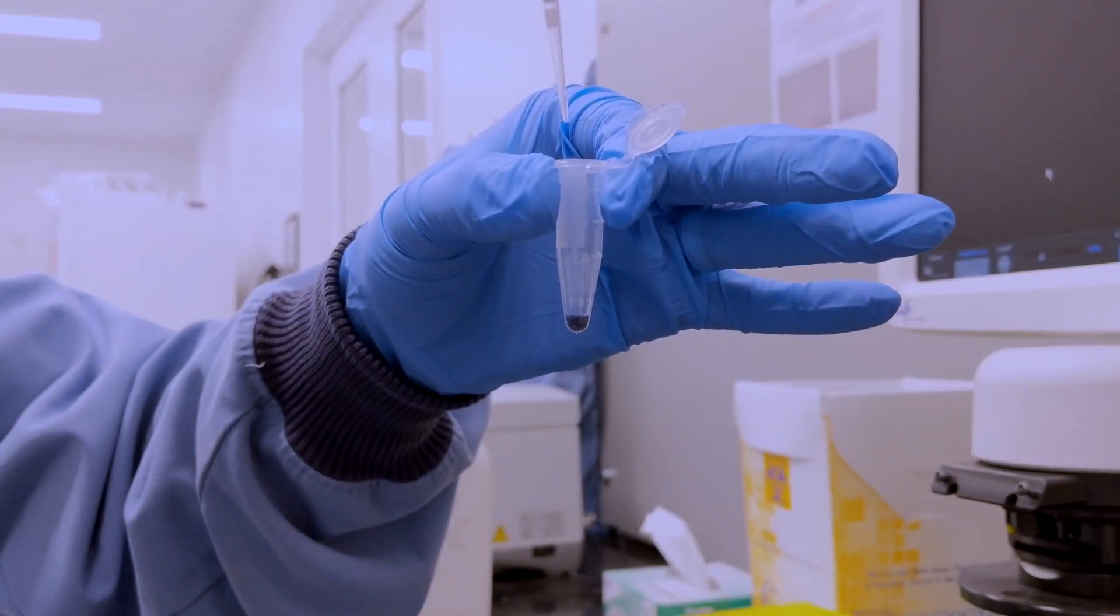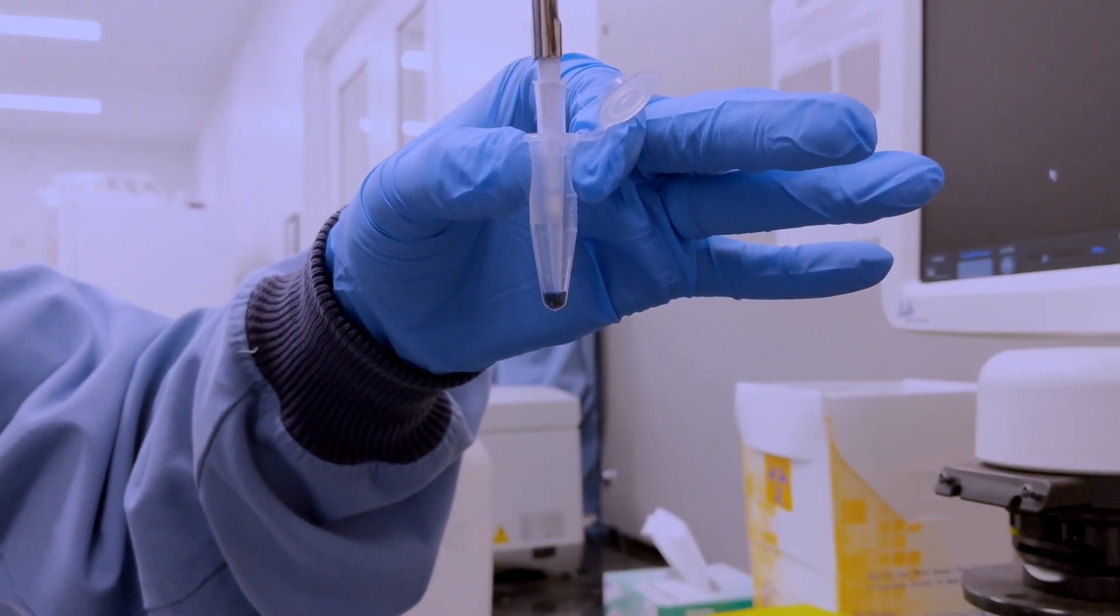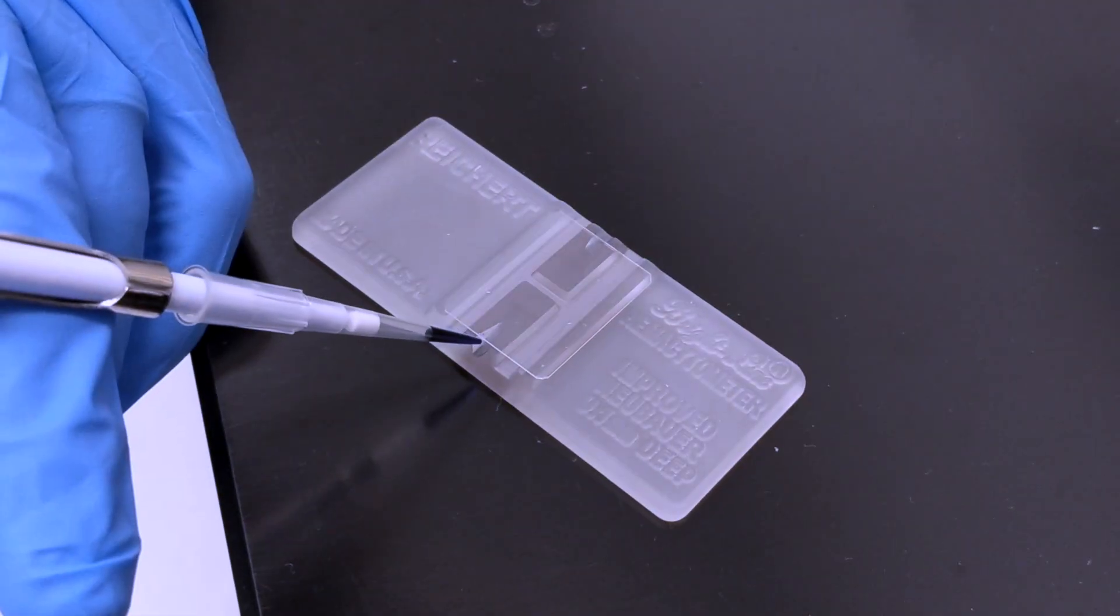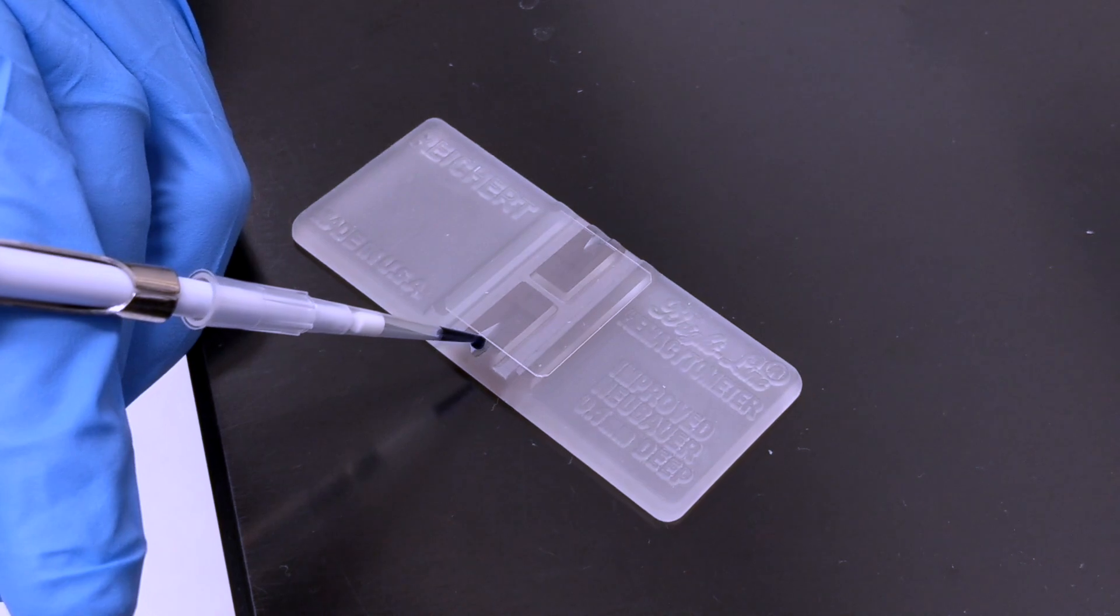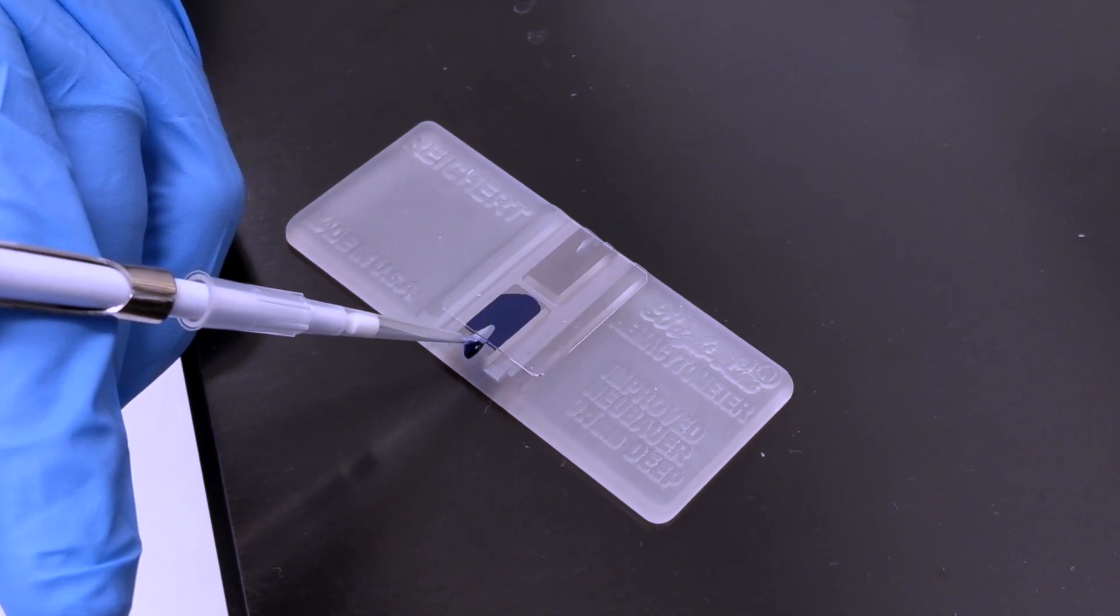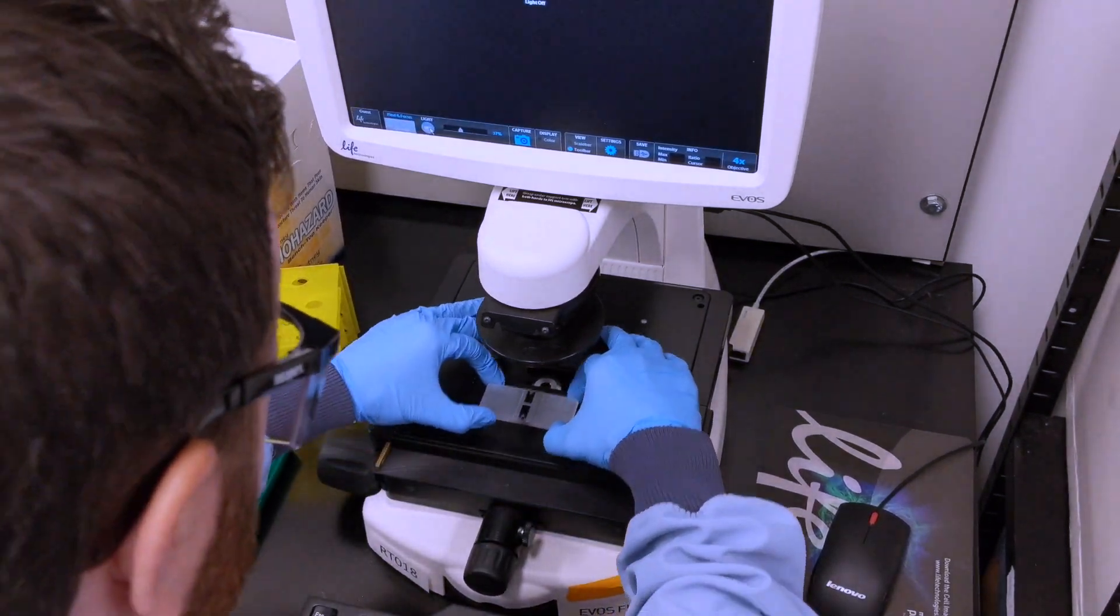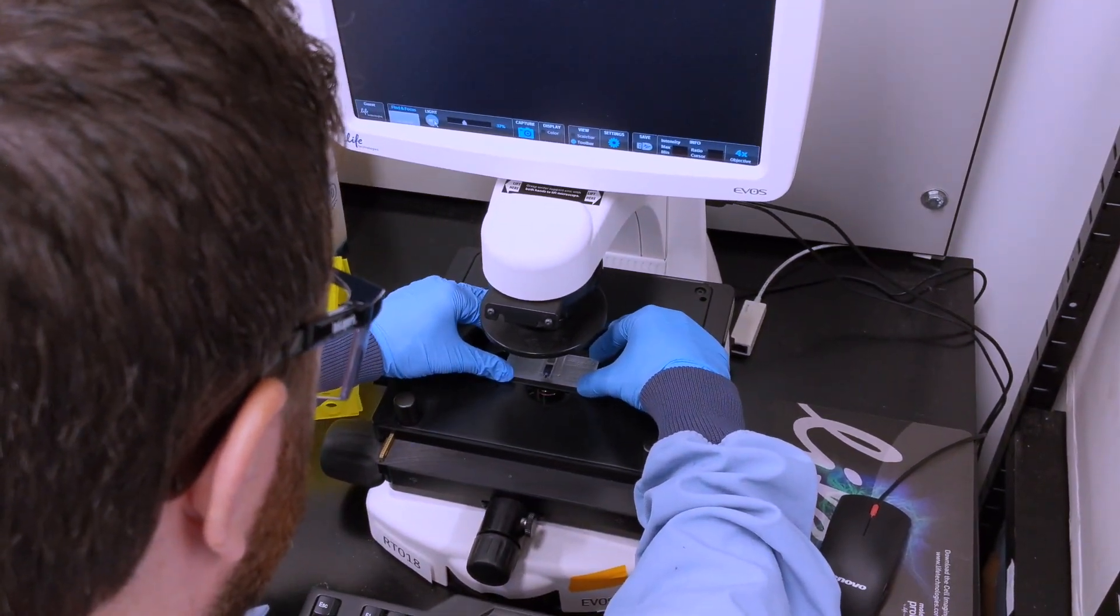Once mixed, withdraw 10 microliters of the Trypan Blue cellular suspension using the micropipette. Gently expel the 10 microliters suspension into the hemocytometer. Place the hemocytometer onto the microscope and allow the cells to settle for two or three minutes.